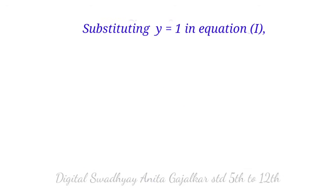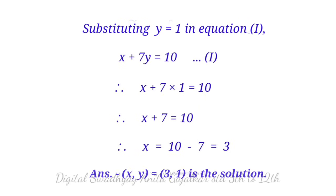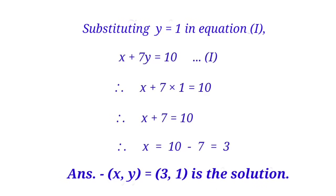Therefore y equal to 23 divided by 23, so y equal to 1. Substituting y equal to 1 in equation first: x plus 7 into 1 equal to 10, so x plus 7 equal to 10, giving x equal to 3. The answer (x, y) equal to (3, 1) is the solution.